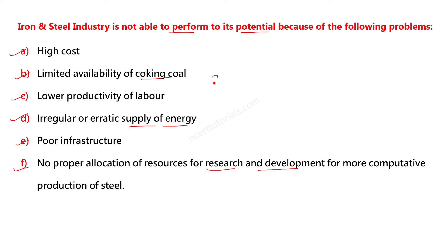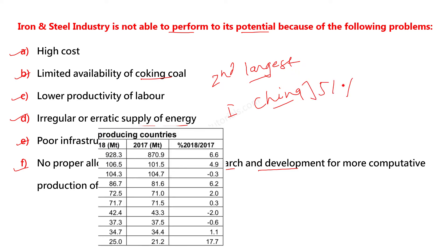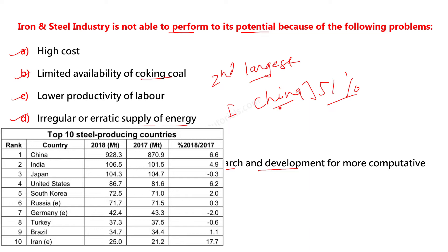Poor performance کے باوجود India crude steel production میں second largest producer ہے اور China number one ہے۔ تاہم China اکیلا 50% سے بھی زیادہ world production کرتا ہے اور باقی پوری دنیا تقریباً 49% کرتی ہے، تو India کی second position پہلی سے کافی پیچھے ہے۔